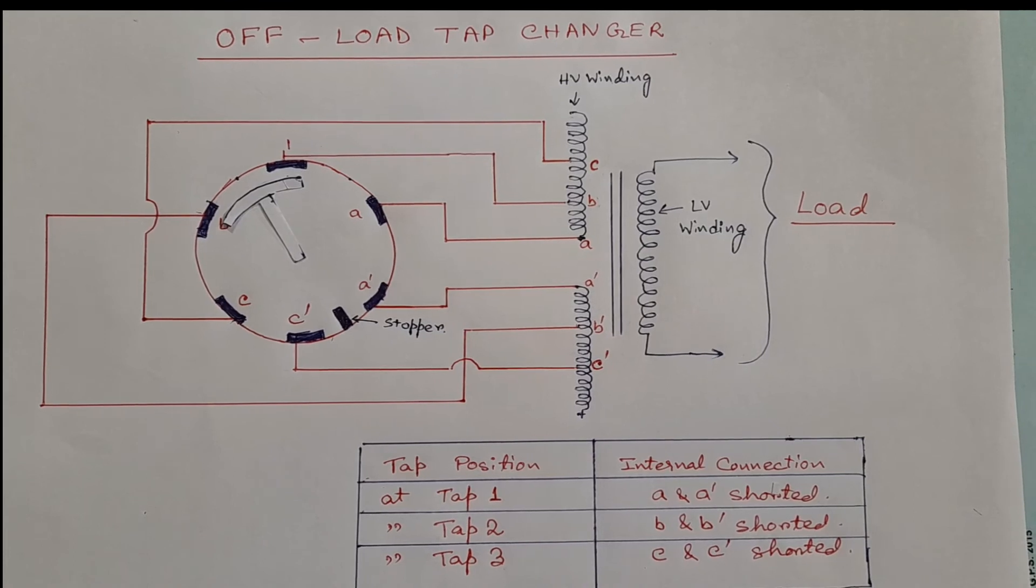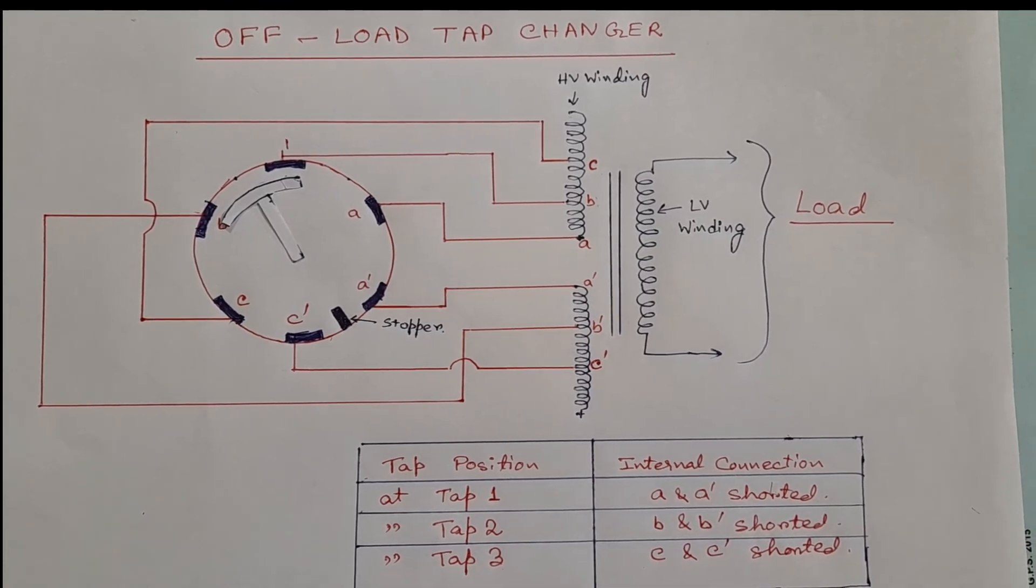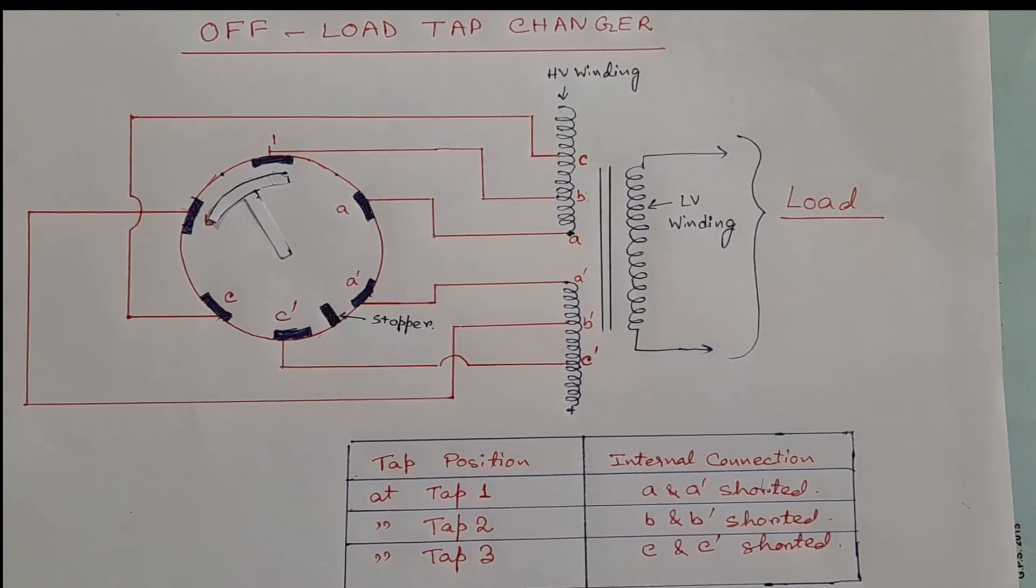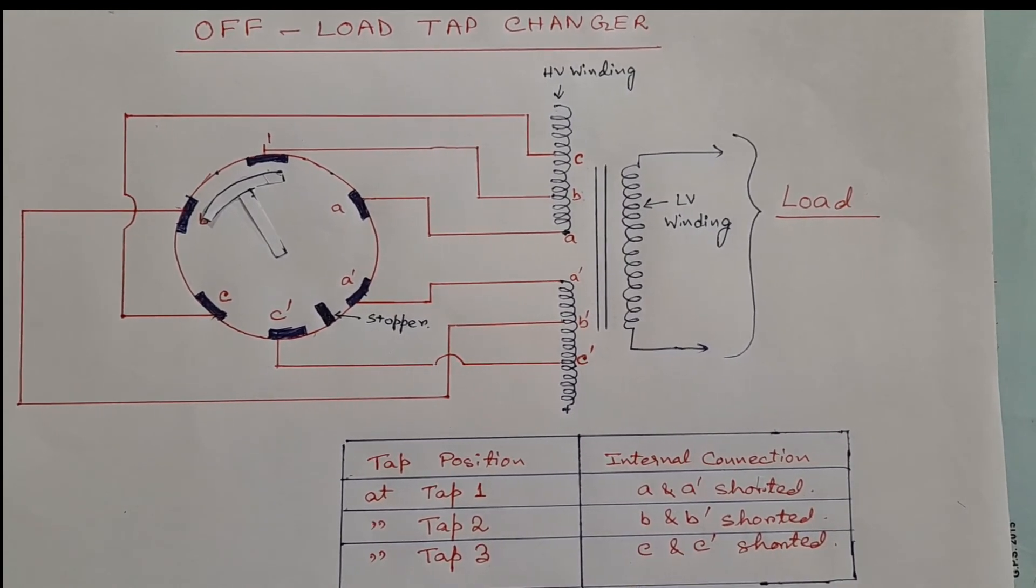So in this example, we see there are three selectable tap positions. Now at which tap will the voltage at the LV side be maximum?